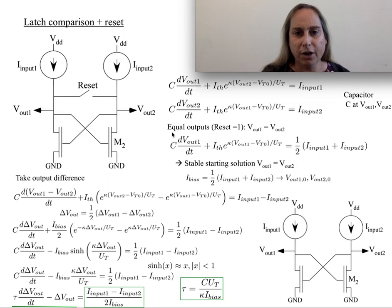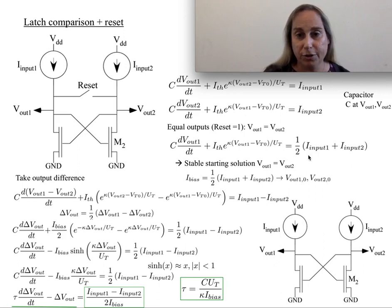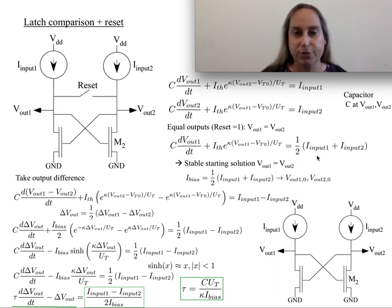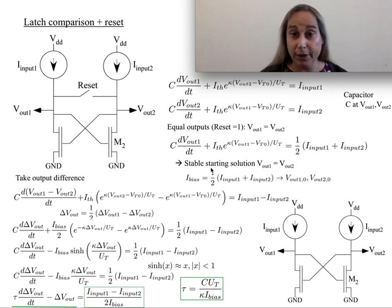When the outputs are equal — which is typically the case when you reset the switch, since you're shorting them — you can sum the equations together to get the combined effect: the combined capacitance and the combined transistors. You get a very nice stable structure based on the common mode of the two currents. This gives a clear stable DC operating point, with a bias current at the common mode.